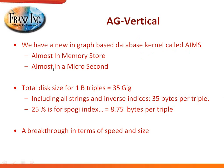We call this version AG Vertical. Internally we call it AIMS, which stands for Almost In-Memory Store or Almost In a Microsecond — meaning we can reach every triple in the database in about a microsecond. If you take a billion triples, the total size on disk is just 35 gigabytes, including all strings and inverse indices. For graph analysis we mostly need one index called the SPOGI index, which is just 25% of all the space, giving us about 8.75 gigabytes per billion triples. That is literally a breakthrough in terms of size and speed.